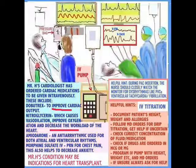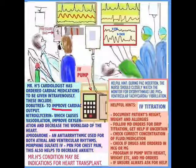A cardiologist has ordered cardiac medications for this patient. This patient is a good candidate for a heart transplant because of his cardiomyopathy. These patients are really tired with very poor cardiac output. He's now on Dobutrex to improve cardiac output, nitroglycerin which causes vasodilation and improves circulation while decreasing the workload of the heart, amiodarone which is an antiarrhythmic used for both atrial and ventricular rhythms, and morphine sulfate IV for chest pain, which also helps to decrease anxiety. The doctor uses titration to decide how to adjust the drips based on cardiac parameters.